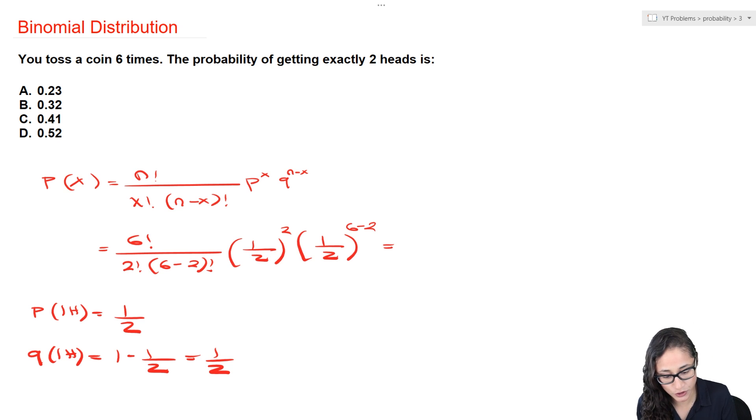Now if you plug in these numbers, you're going to get about 0.23. Note that you can just plug it into your calculator. You should have factorial in your calculator. It's really easy to do. So the answer is going to be A.